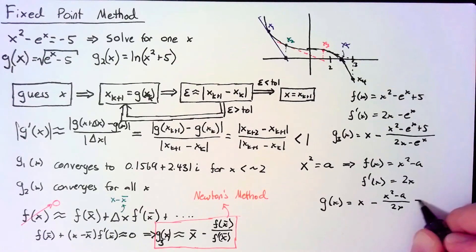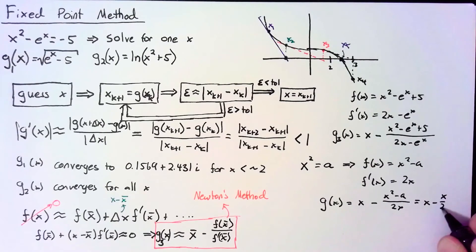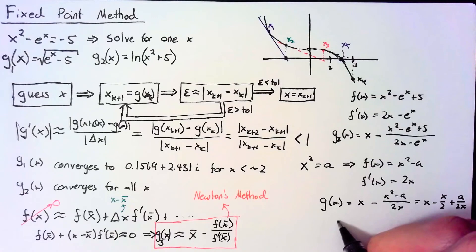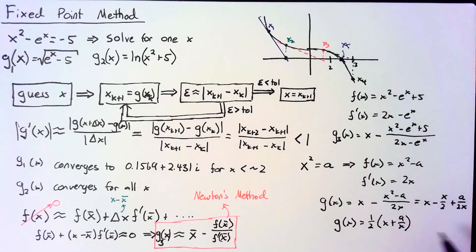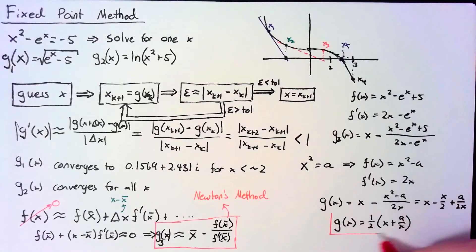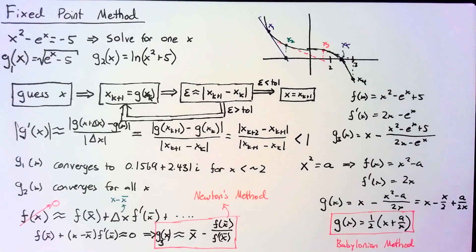So parking that in down here, we'll get g(x) = x - (x² - a)/(2x). This comes out equal to x - x/2 + a/(2x). So simplifying this down one more step, we can say that g(x) = ½(x + a/x).